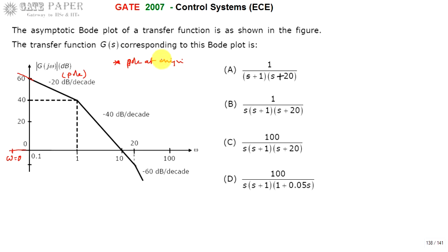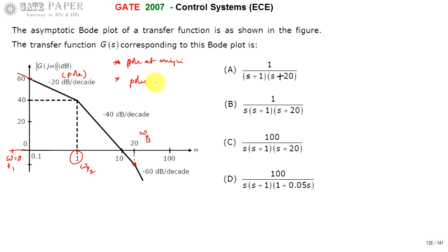So the first pole is present at the origin. The second pole, omega P2, is present at 1, and the third pole, omega P3, has a slope change at 20. So three poles are present at frequencies 0, 1, and 20.